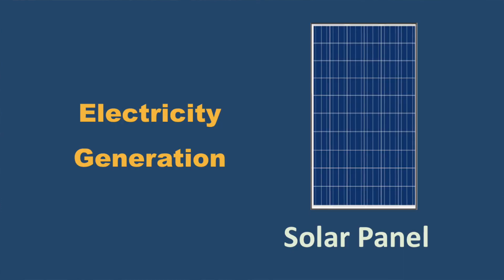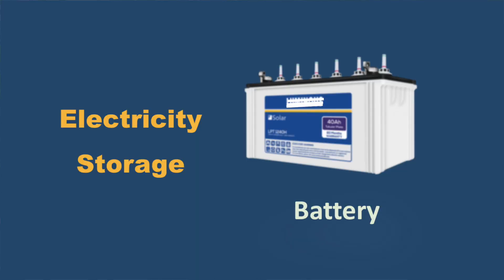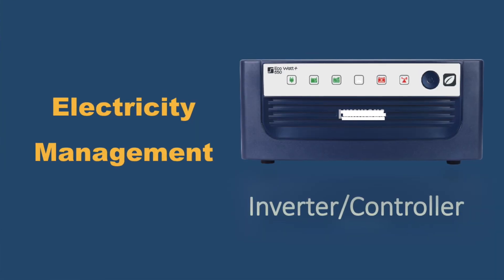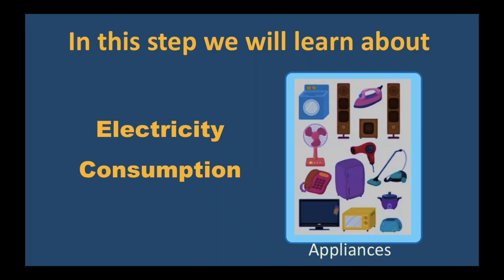Hello and welcome once again in this series where we are learning how to design a solar system for our own homes. We are very close to designing a solar system. So far we have learned that there are electricity generators like solar panels, energy storage like batteries, and energy management systems like inverters and charge controllers. In this episode we look at more details about the electricity consumption aspect — that is, your appliances.